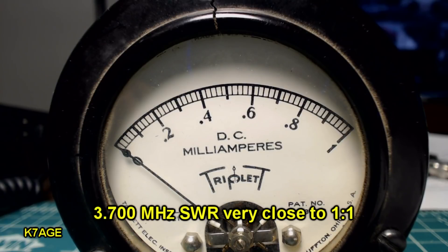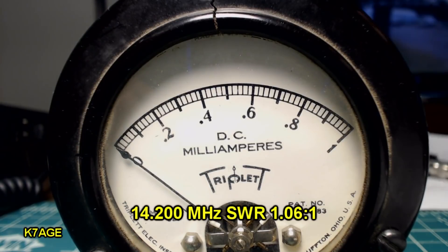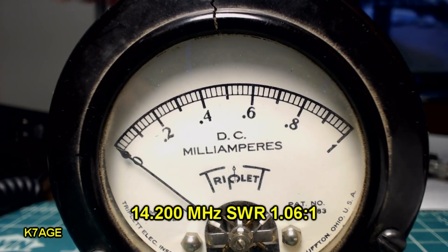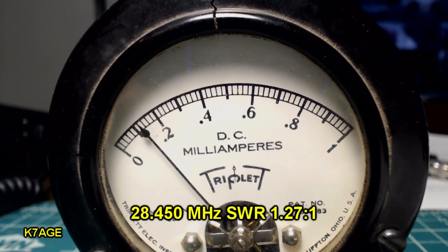So let's check the SWR for various bands with the 50 ohm termination. 3.7 megahertz, 7.15 megahertz, 14.2 megahertz, 21.2, 28.45.